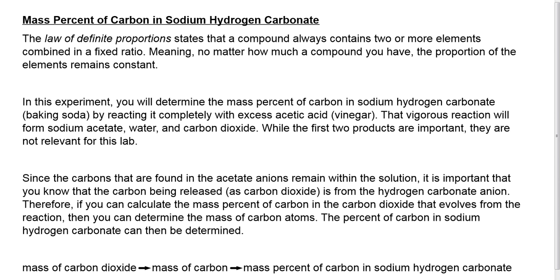In this experiment, you're going to determine the mass percent of carbon in sodium hydrogen carbonate, or sodium bicarbonate, which is baking soda. You'll do that by reacting it completely with excess acetic acid, which is vinegar. Baking soda and vinegar are not the most dangerous chemicals; however, we're still going to be goggled up and we're still going to be careful.